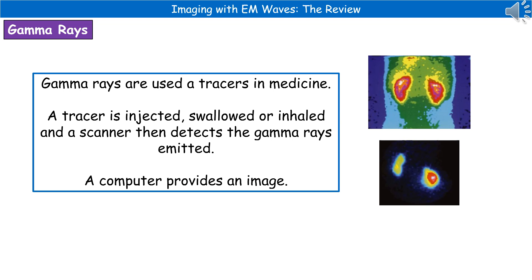The next type uses gamma rays. As already mentioned, we can use these as tracers. In medicine, a radioactive material is given to a patient — either injected, swallowed, or inhaled — depending on which organ system we want to investigate. A scanner is then passed over the surface of the body. As the source inside emits gamma rays, they pass out of the body and are picked up by the scanner, which feeds into a computer to produce a colourful image.